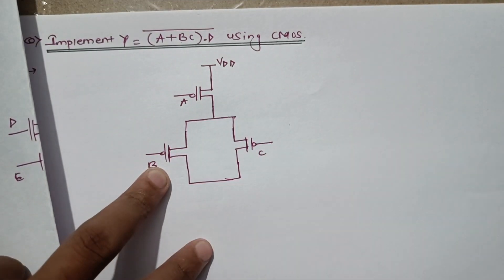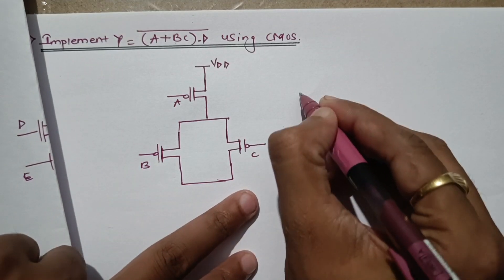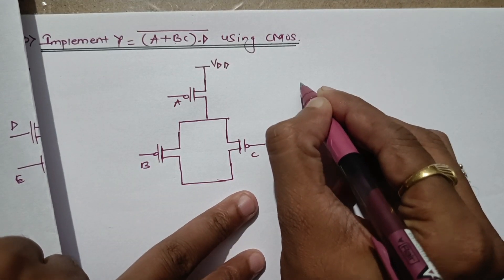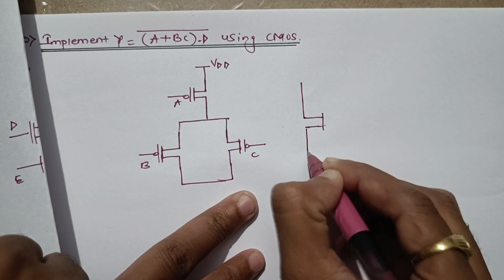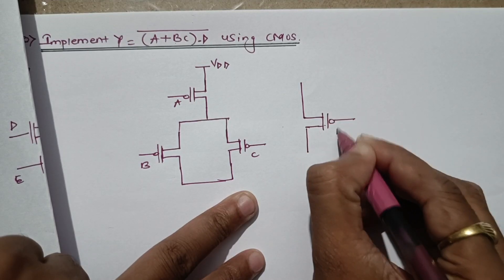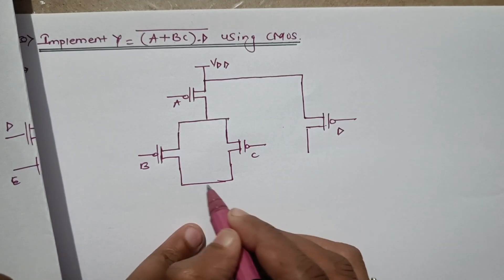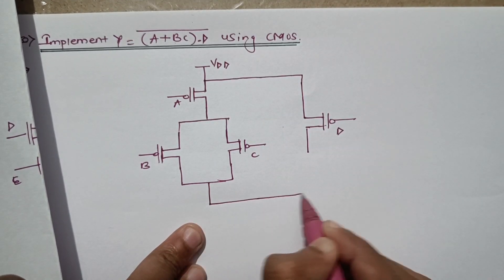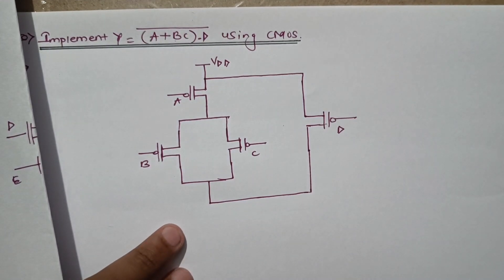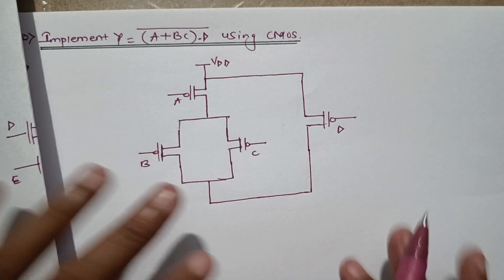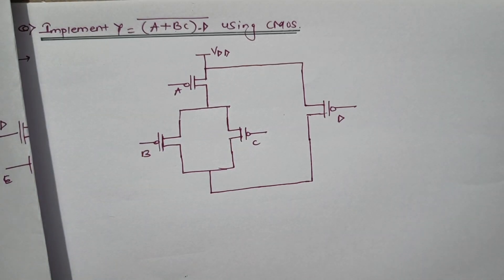This entire combination is in multiplication with D. For multiplication, PMOS will be in parallel, so this entire structure will be in parallel with D. Let's draw a PMOS transistor with input D and arrange it in parallel. This completes the implementation using PMOS only.